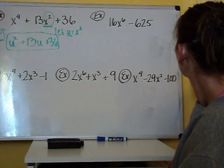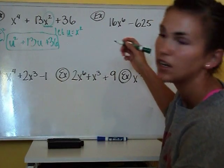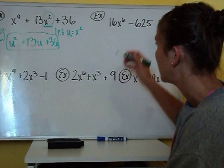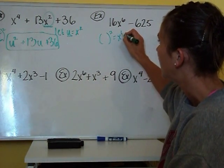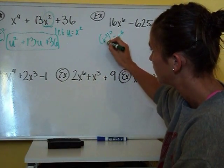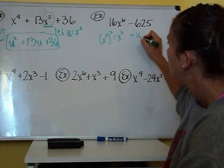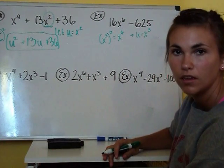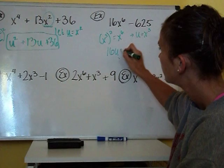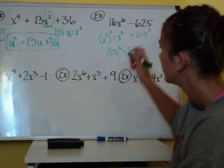Looking at the next problem — here we don't have a B term — we need to figure out: if I want to put this in quadratic form and see a squared here, what squared equals X to the sixth? Going backwards from our power of a power property, that answer is X cubed, because 3 times 2 is 6. So if I take X cubed and square it, I get X to the sixth. That means U equals X cubed, and our problem becomes 16U squared minus 625.